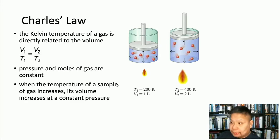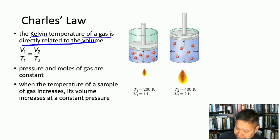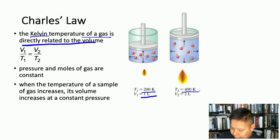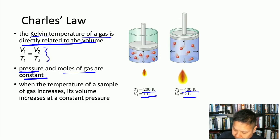The next gas law is Charles' Law. In chemistry, temperature is always expressed in Kelvin. Charles' Law says that the temperature of a gas is directly related to its volume. For example, a gas at 200 K with a volume of 1 liter — if you double the temperature to 400 K, the volume also doubles to 2 liters. Pressure and moles of gas are kept constant; this law only deals with temperature and volume.